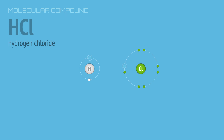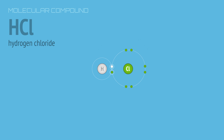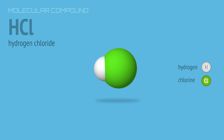In a previous video, we saw how non-metal atoms with empty electron locations will share a pair of electrons to complete their outer shells. A pair of shared electrons is called a single covalent bond and is shown as a single line between the atoms. This single covalent bond is the force that binds hydrogen and chlorine together into one molecule.